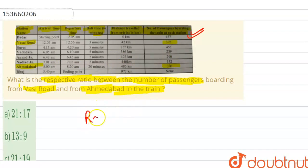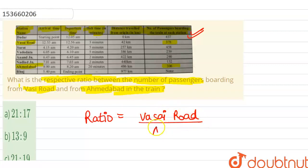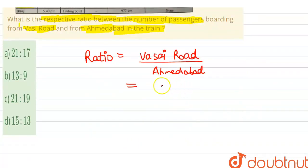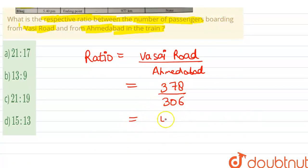So, let us understand what we will do. The ratio will be — the numerator will be the person from Vasai Road and the denominator will be Ahmedabad, because you have the ratio in this order. So, that gives us 378 upon 306. Now, let us simplify this. If we divide by 9, we get 42 over 34.